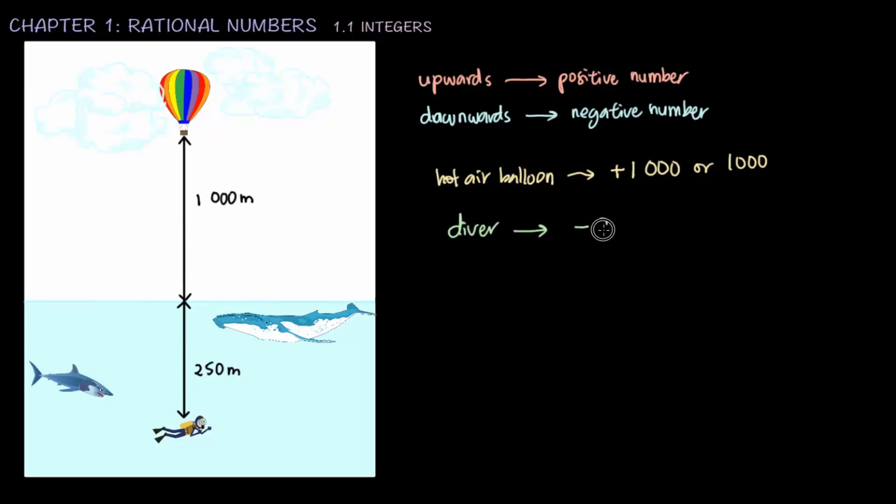From this, we can assume that moving upwards is represented with a positive number, while moving downwards is represented with a negative number. Therefore, the movement of the hot air balloon is 1,000 meters upwards. Therefore, the hot air balloon can be represented with plus 1,000 or 1,000. While the diver, we can represent it with negative 250.